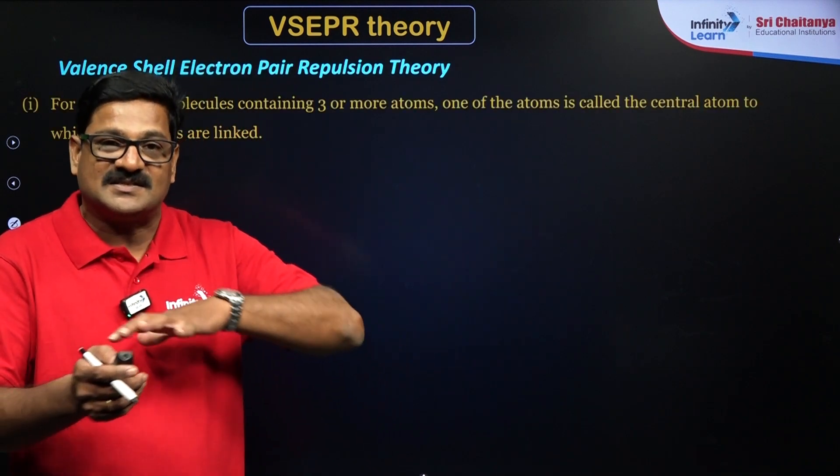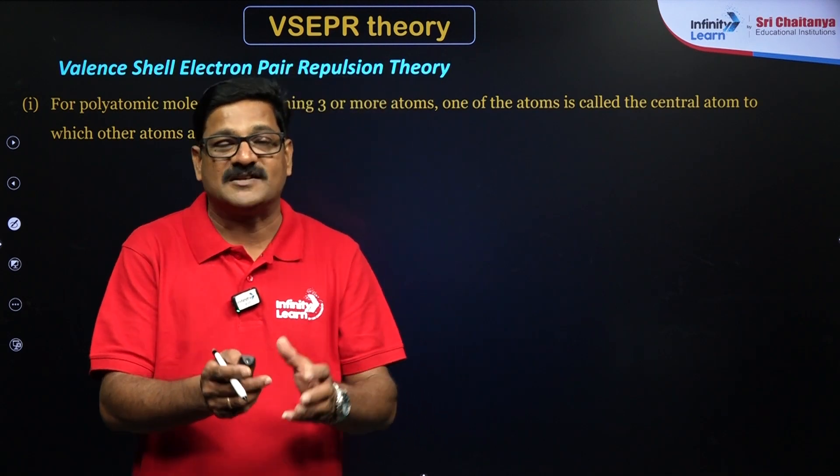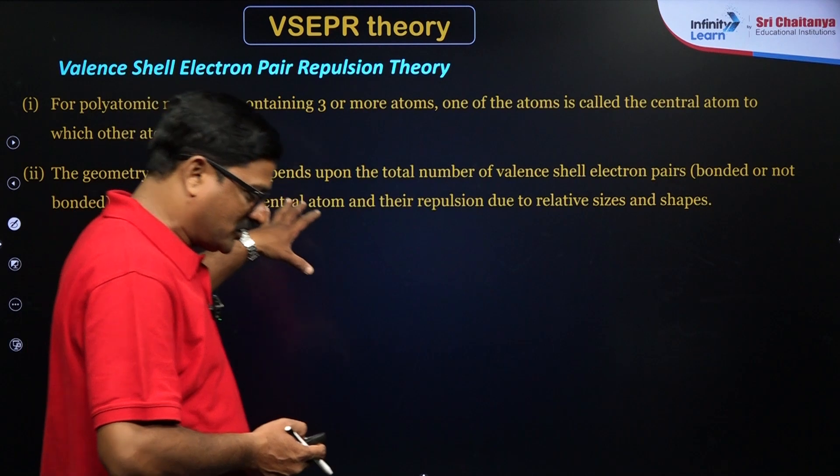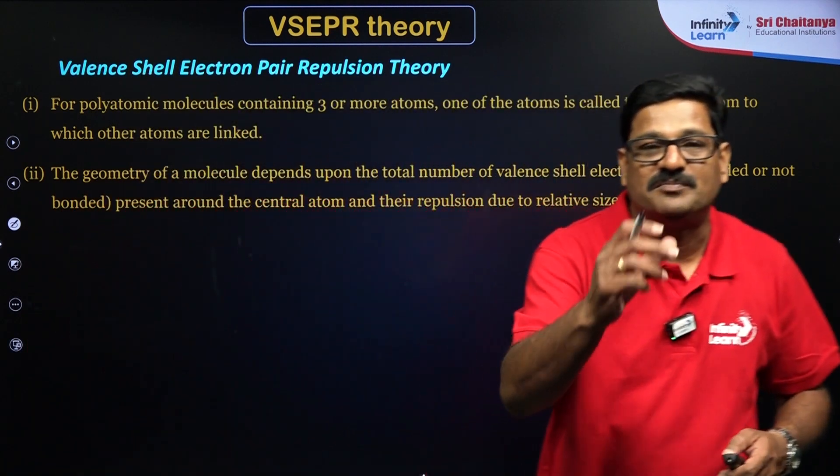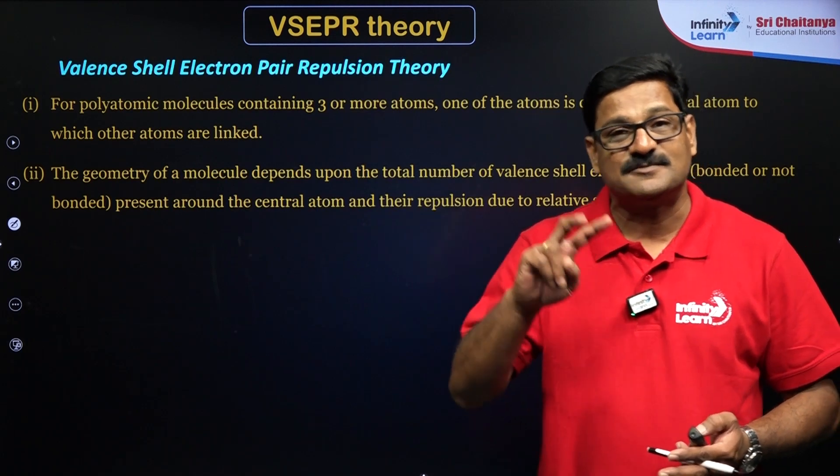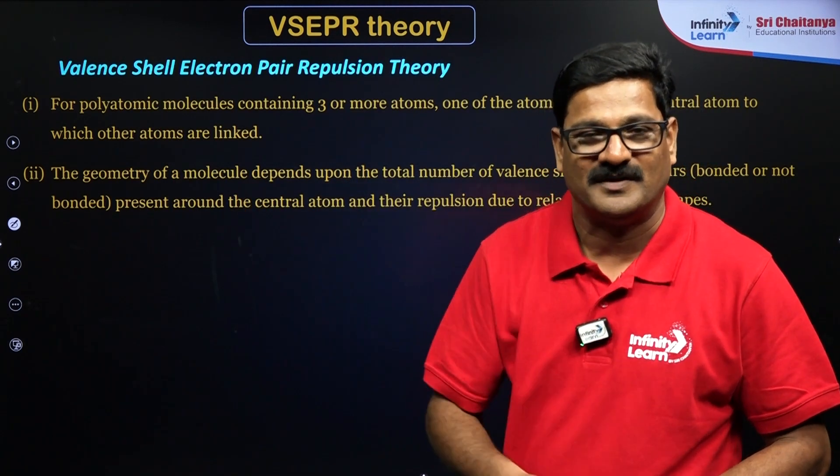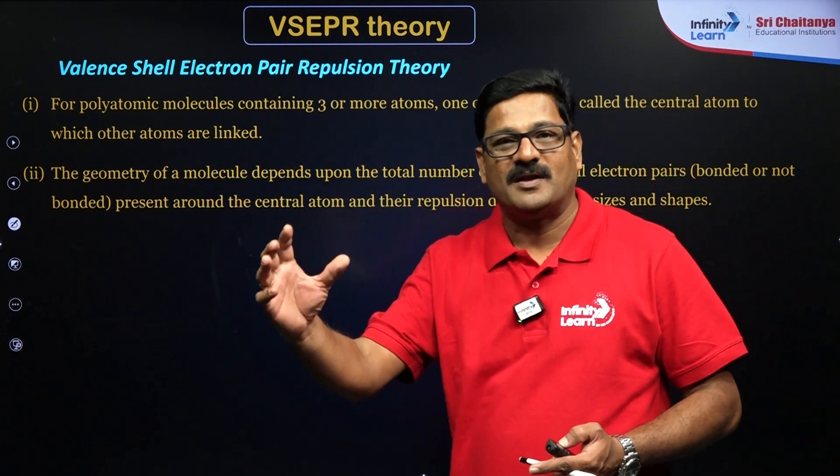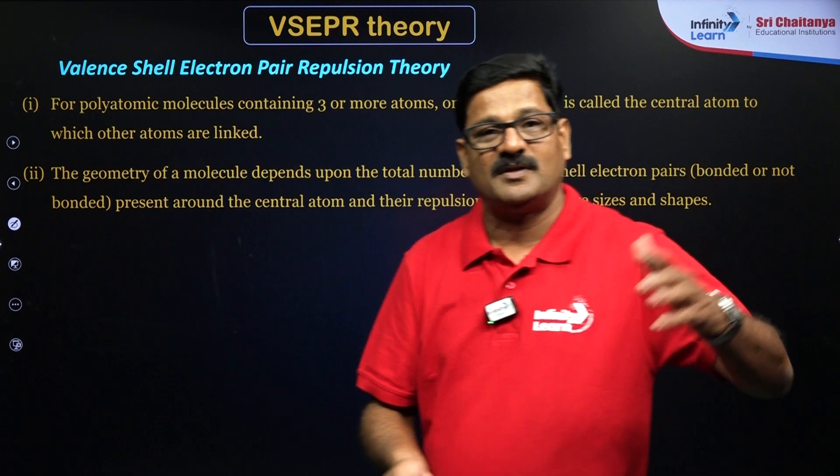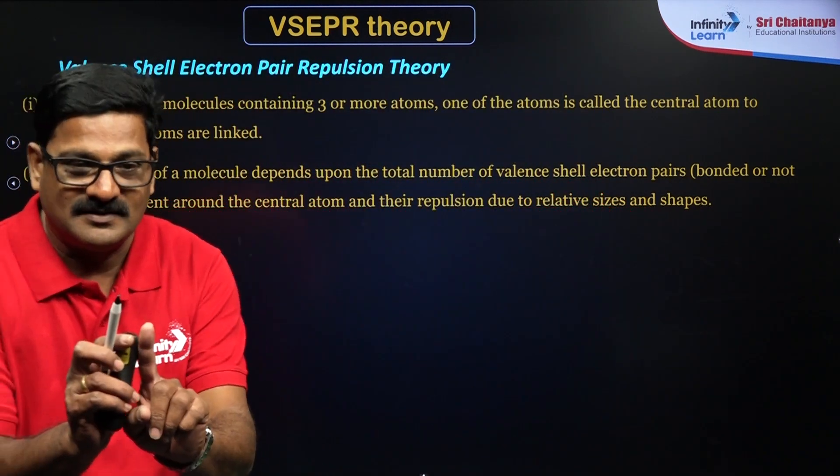So this VSEPR theory is based on the shape of the molecule. The shape of the molecule is decided by the number of electron pairs present on the central atom of the molecule. So this central atom of the molecule has electron pairs of two types. Electrons always exist as pairs. These pairs are two types: lone pair of electrons and bond pair of electrons. The lone pair of electrons means the pair of electrons which do not participate in the bond, and the bond pair of electrons are the pair of electrons which participate in the bond.